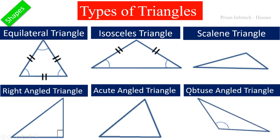Next one is an obtuse-angled triangle. In this triangle, one of the angles is obtuse, so this triangle is called an obtuse-angled triangle.